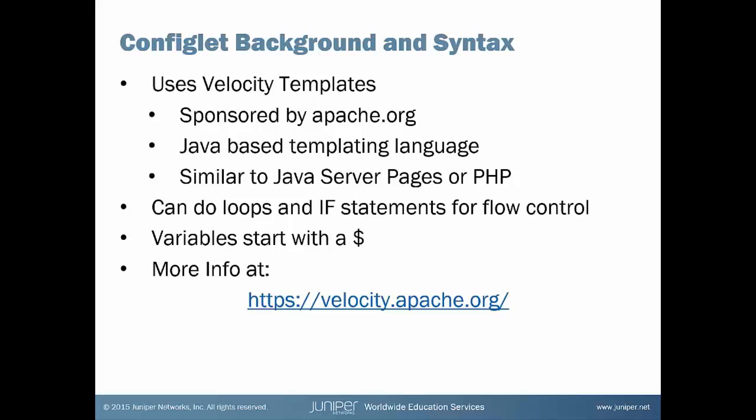CLI Configlets are based on Velocity Templates. Velocity Templates is a templating language created and sponsored by Apache.org. It's a Java-based templating language, similar to Java Server Pages in philosophy and analogous to PHP. It is a sophisticated language — it can do loops and if-statements for flow control. The one thing you'll want to pay attention to is the dollar signs: that's how you identify a variable, with a dollar sign in front of a keyword. For more information, visit velocity.apache.org for the full specifications.